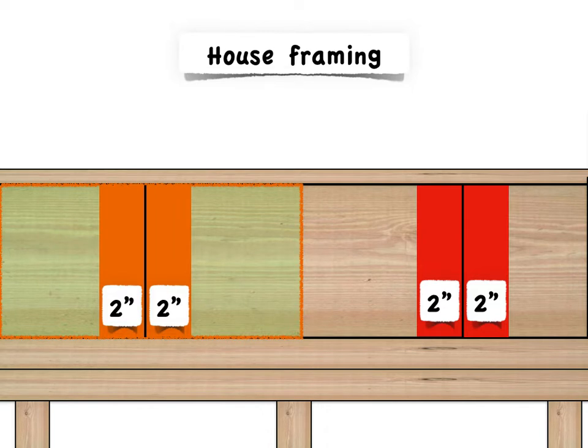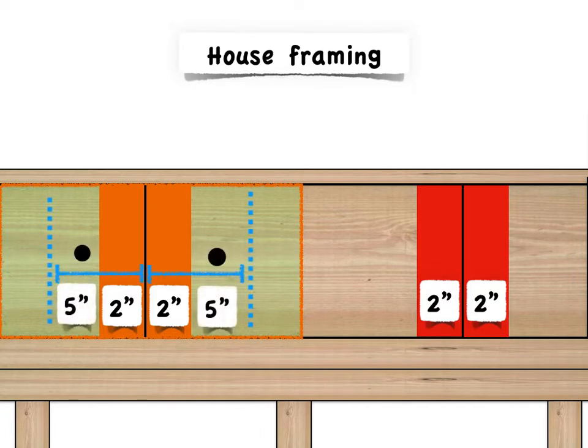It's going to get a little complicated as we carry on. So I'm using solid orange for the areas you cannot place a fastener in the ledger and solid red where you can't place it in the band joist. Now there also must be a fastener within five inches of each end of a ledger or both sides of a break.